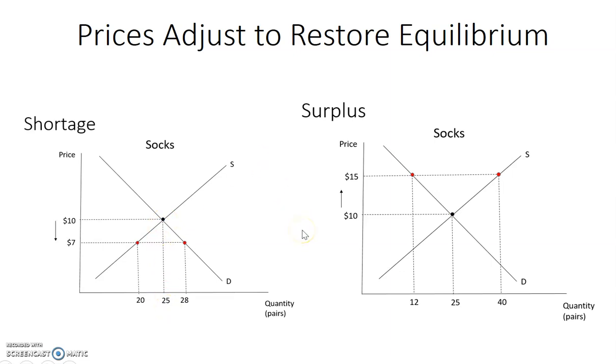In the surplus, the prices will adjust. In this case here, because you have a quantity supplied that's greater than the quantity demanded, producers will want to lower the price. And they will continue to lower the price up until the point where you're at $10 because that is where you're at market equilibrium where quantity demanded equals quantity supplied at 25 pairs of socks.